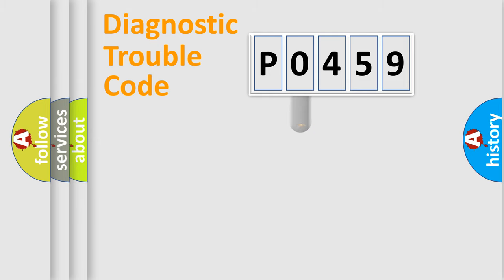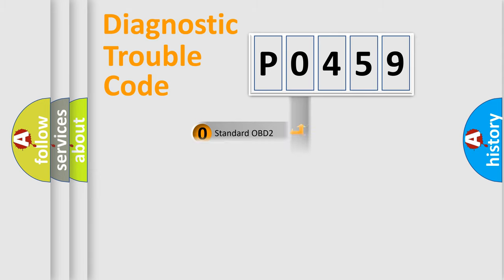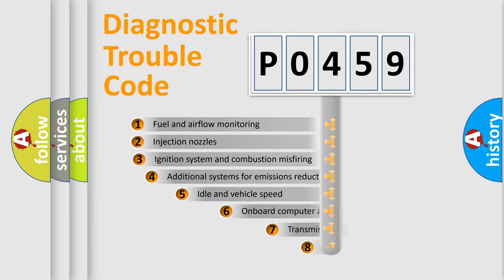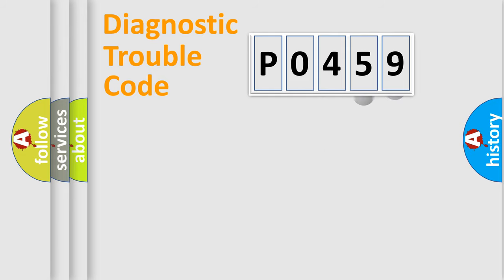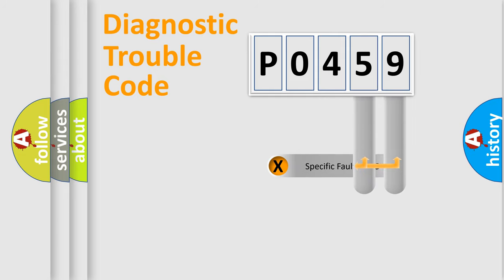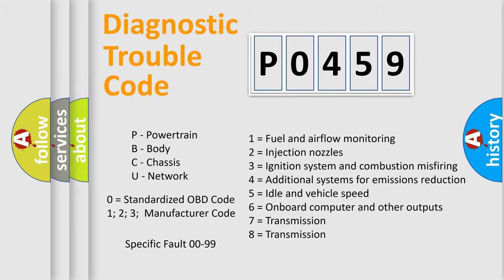This distribution is defined in the first character of the code. If the second character is expressed as zero, it is a standardized error. In the case of numbers 1, 2, or 3, it is a manufacturer-specific error. The third character specifies a subset of errors, and this distribution is valid only for standardized DTC codes. Only the last two characters define the specific fault of the group.